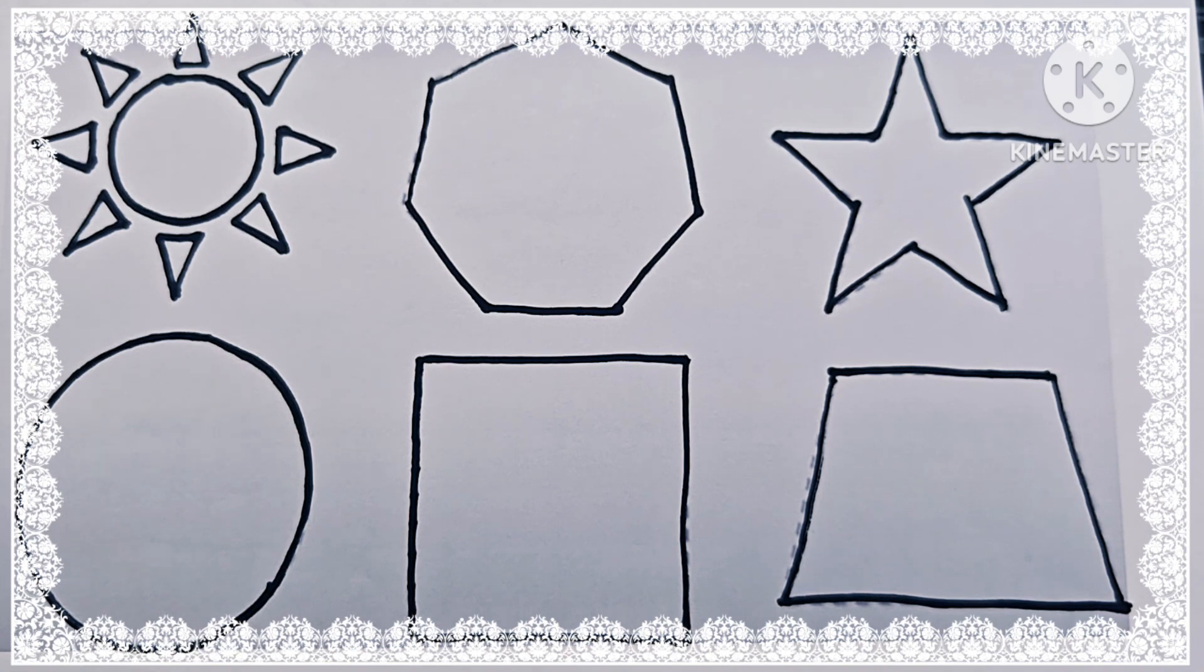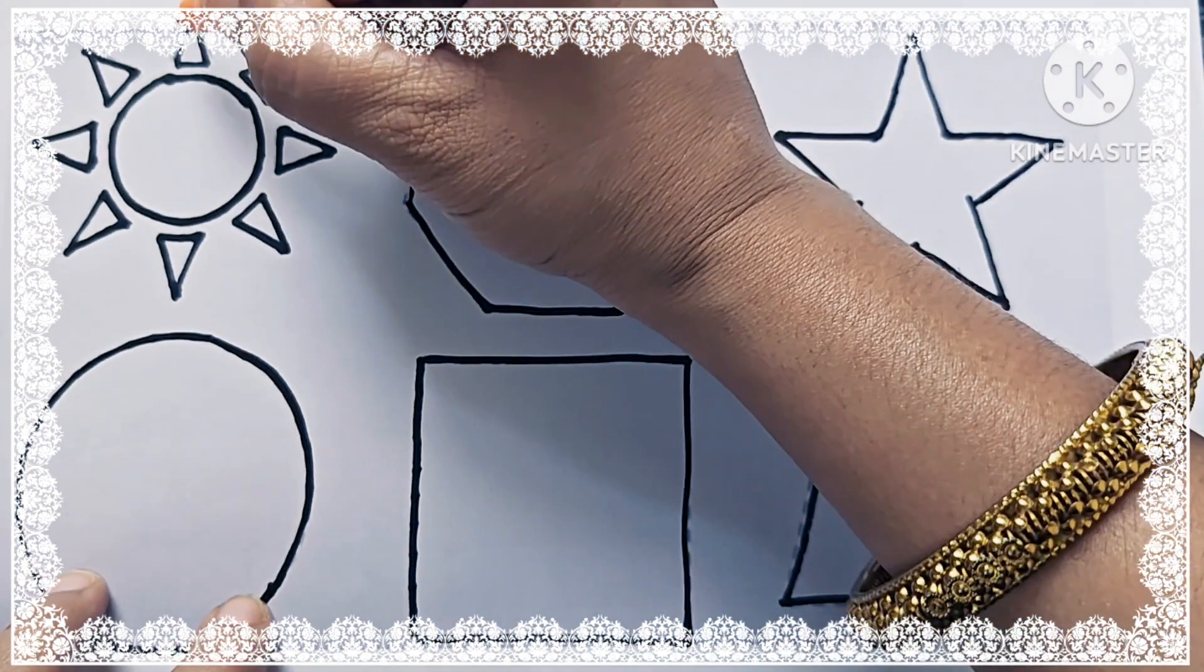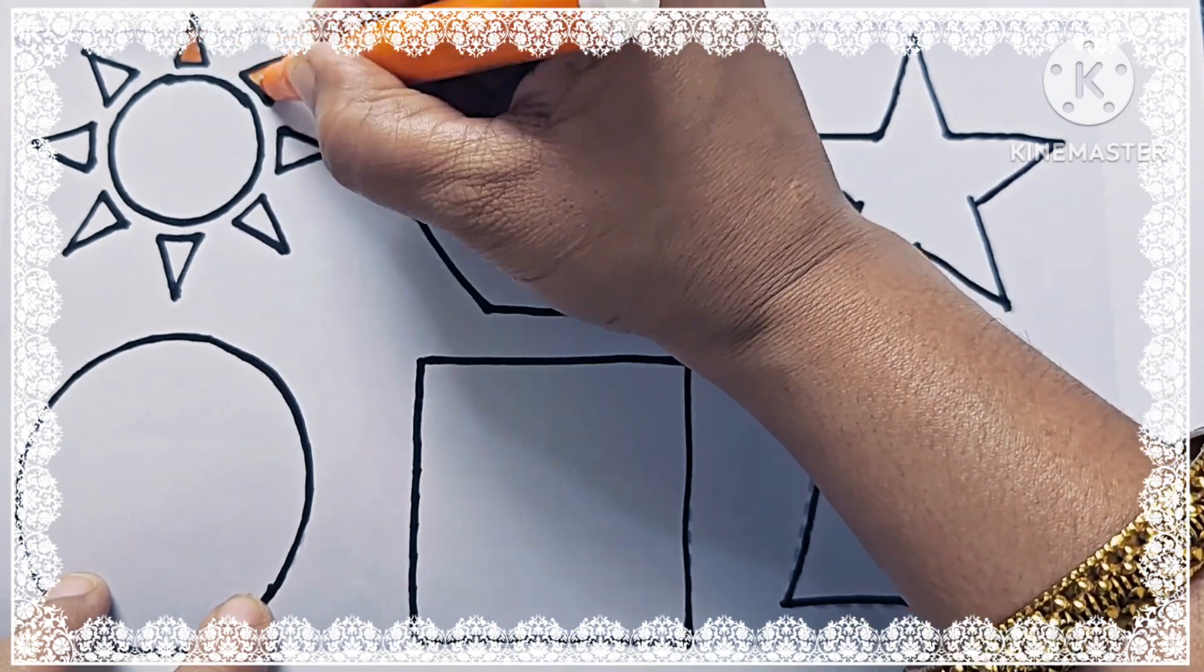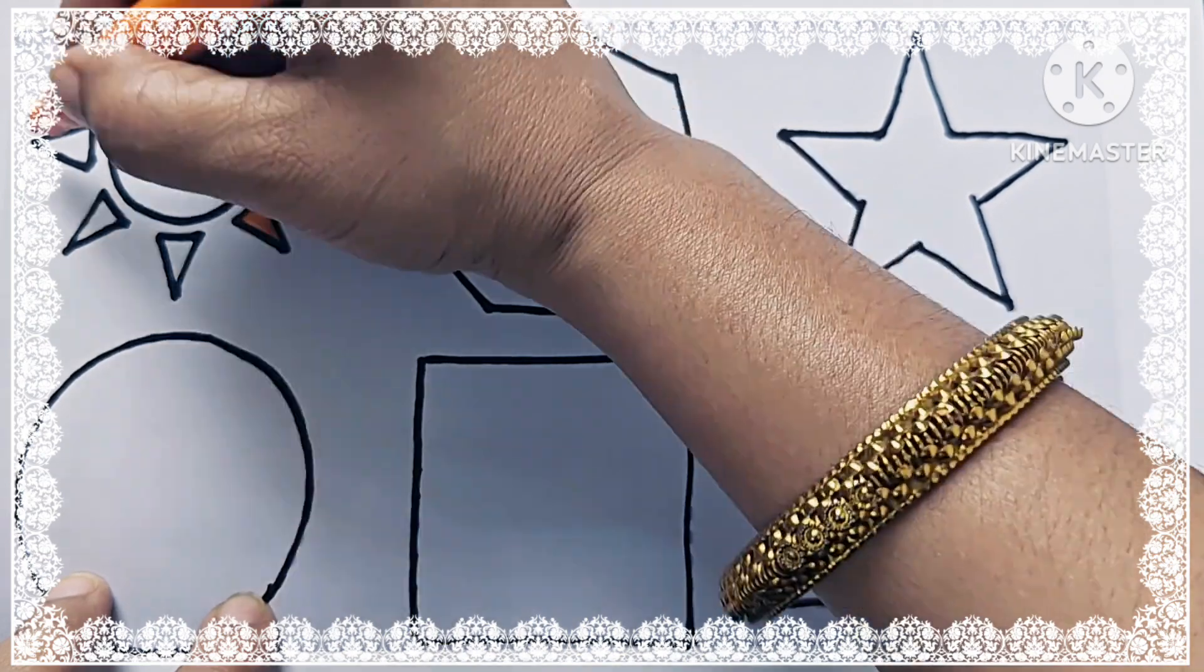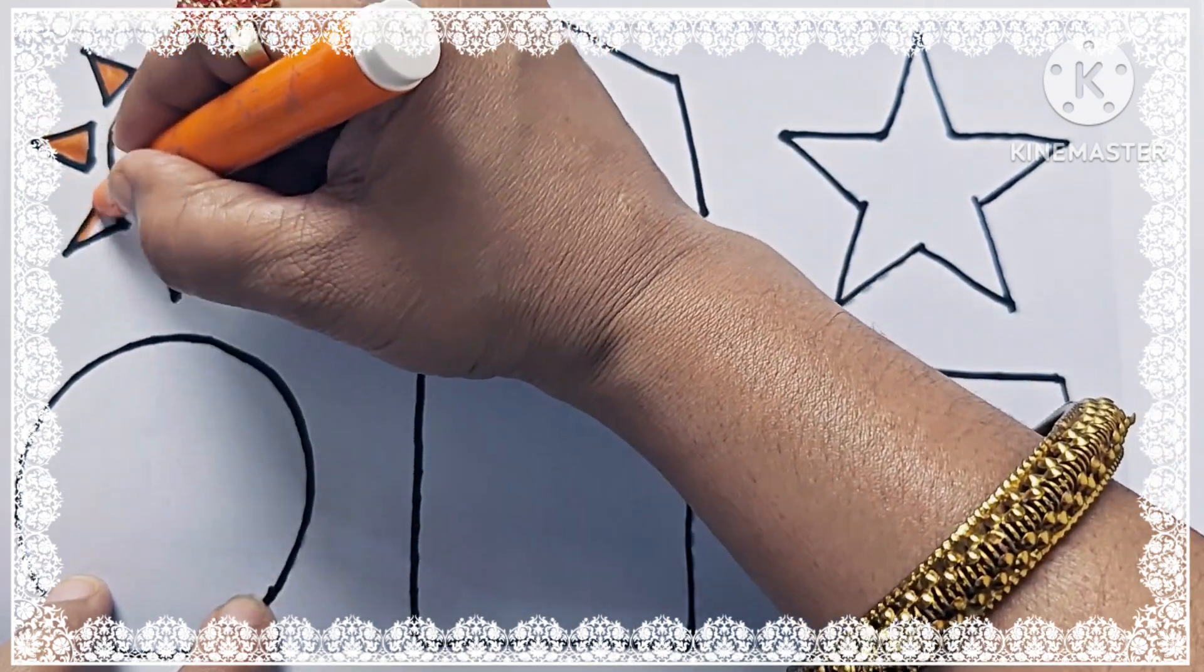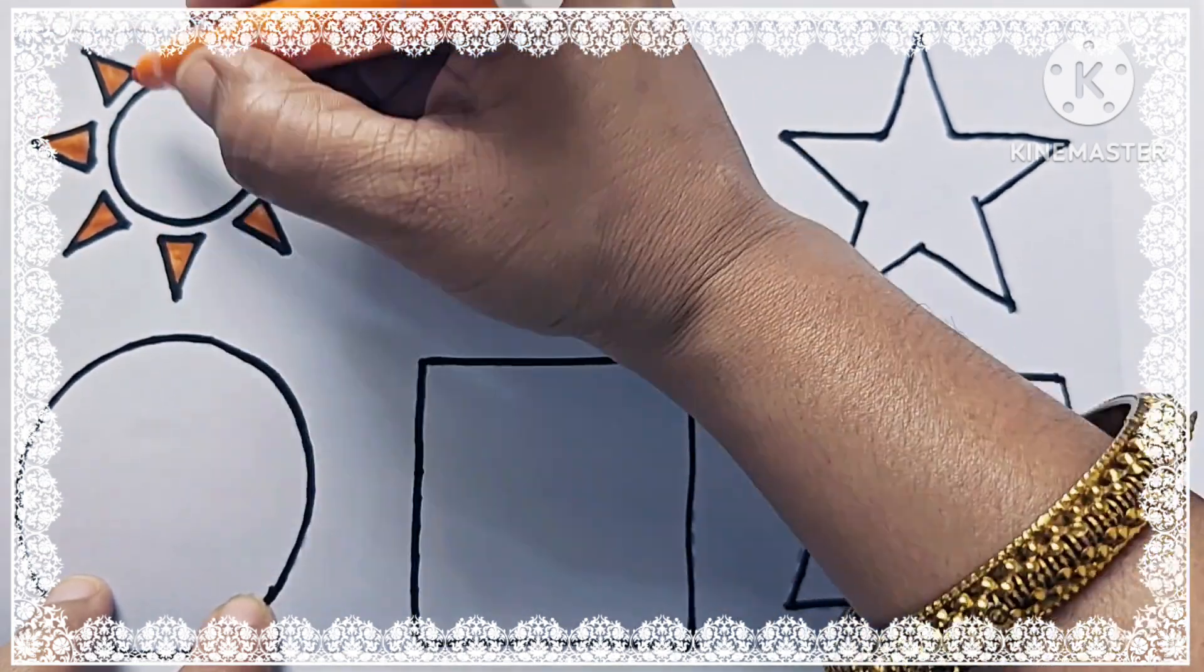Now let us color these shapes. This is orange color. Orange color sun. Shape is sun. Shape is sun. Color is orange.